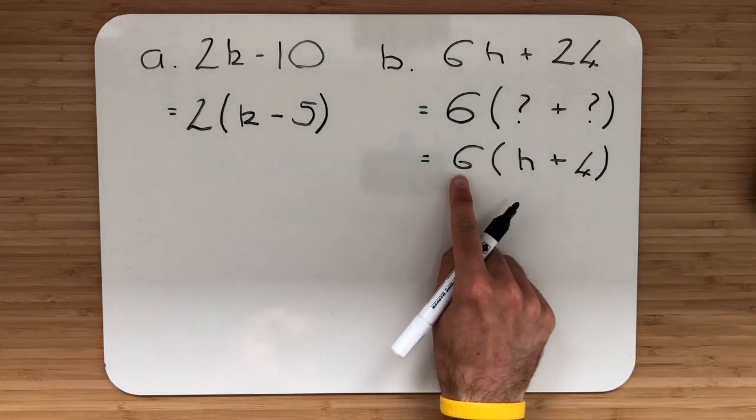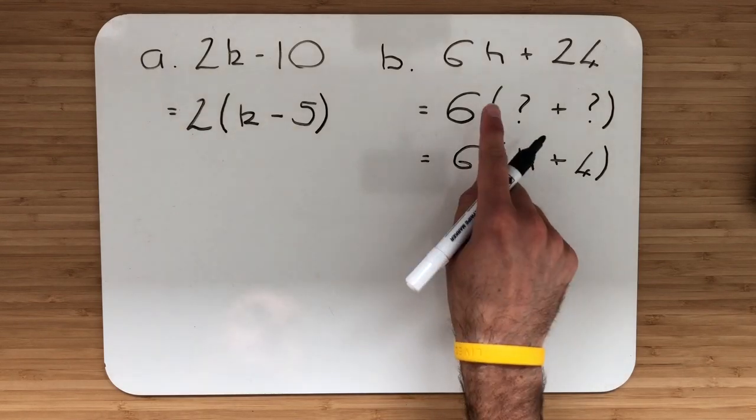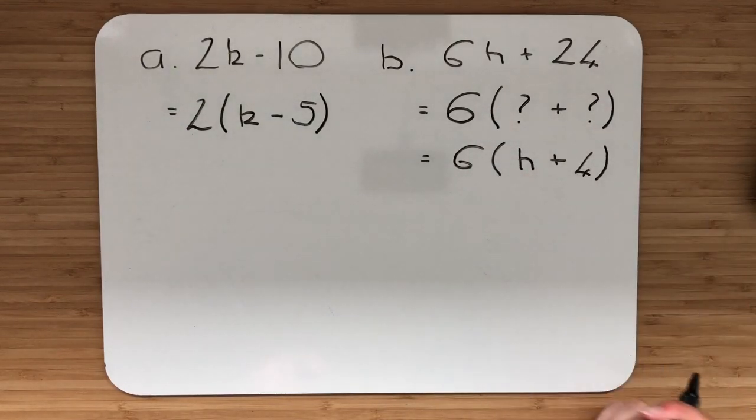Again, just double checking in your head. 6 multiplied by h, 6h. 6 multiplied by 4, 24. Perfect.